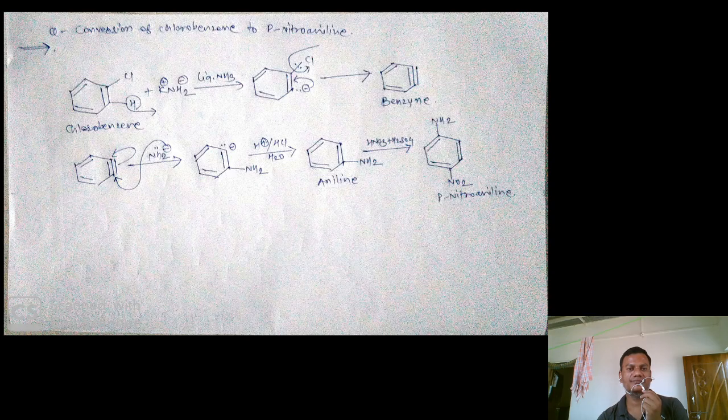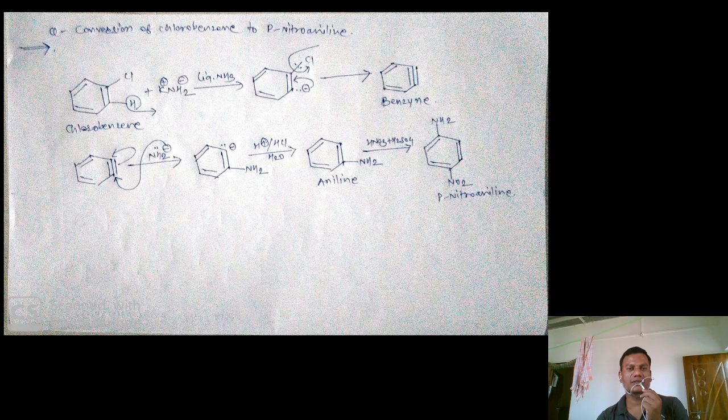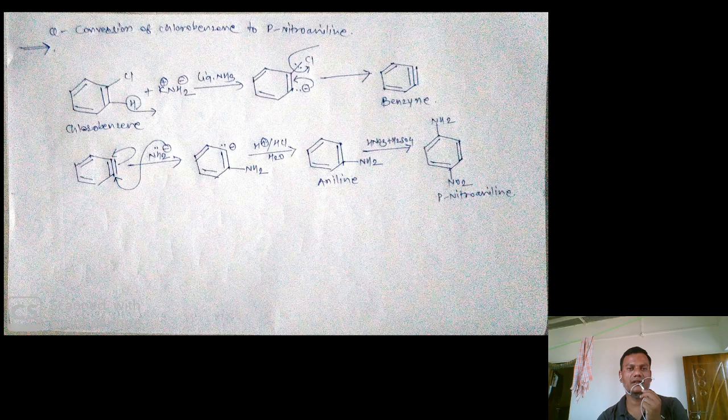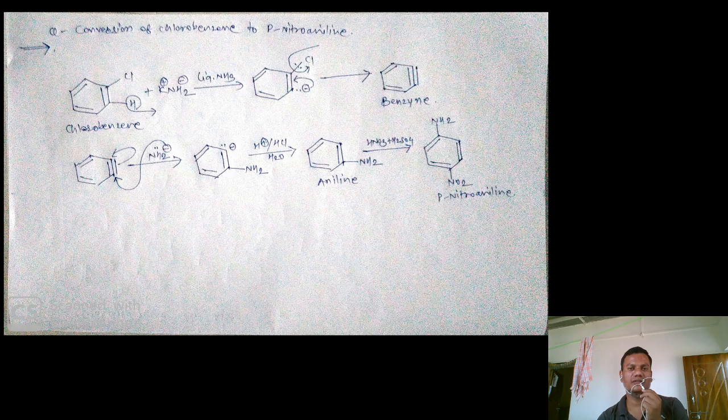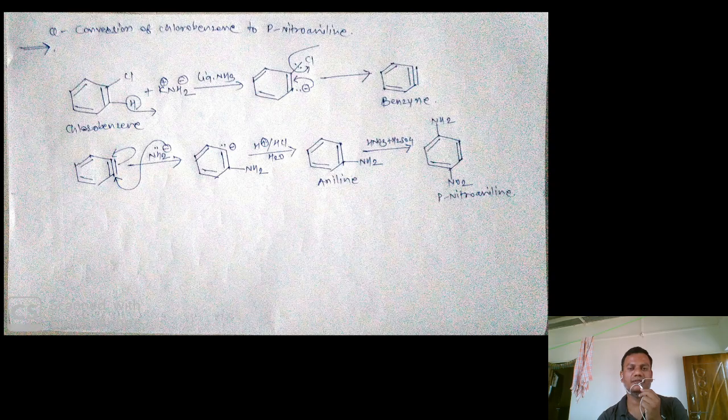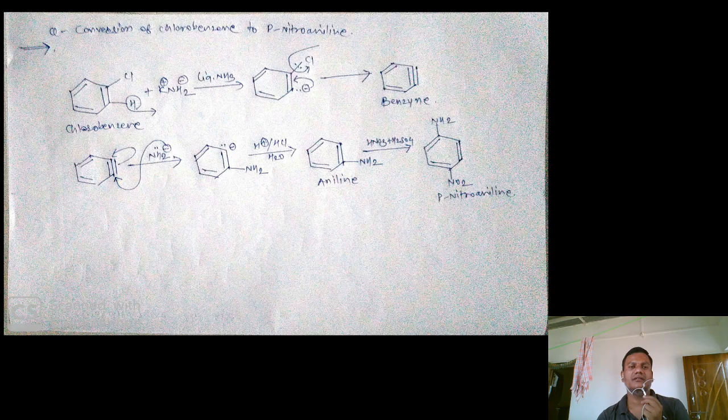This chlorine is the best leaving group, so it leaves along with the bonding electrons, which makes it positively charged. The negative charge satisfies this positive charge, forming a benzyne intermediate with a triple bond. Through this benzyne intermediate, the conversion takes place.